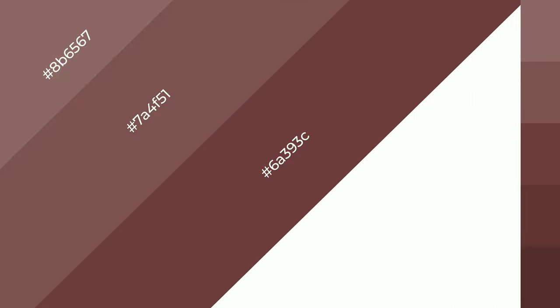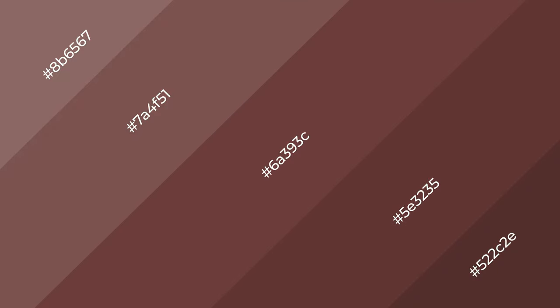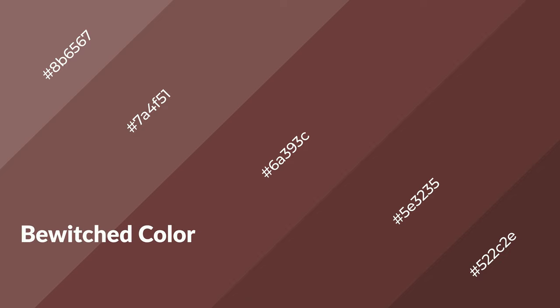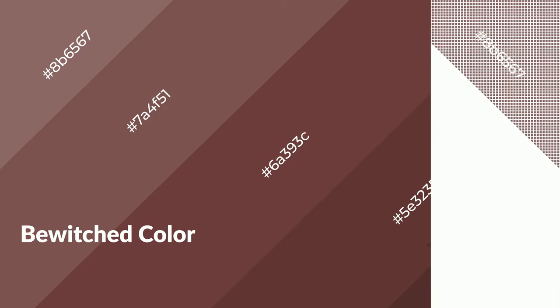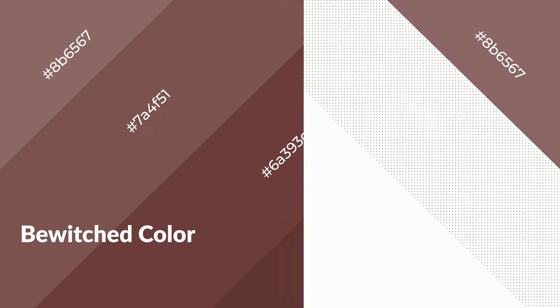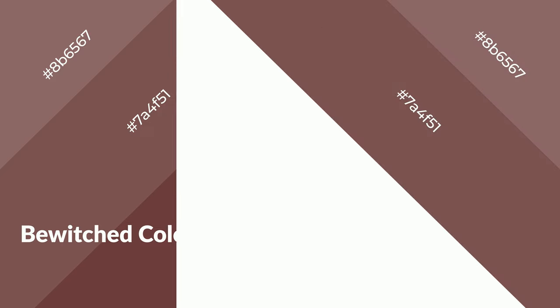To generate shades of a color, we add black to the color. Shades are used in patterns, 3D effects, and layers, and they create depth and drama. Bewitched is a warm color and it emits cozier and active emotions. Warm colors are symbols of warmth, fire, heat, and sunshine.